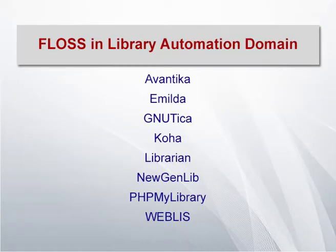Different ILS options are available in the library domain. We have studied Avantika, Emilda, Gnuteca, Koha, LibLime, and NewGenLib. We already know that Koha, NewGenLib, and Emilda are in the matured block, and Koha is the first and most comprehensive product in this series of open source ILSs.